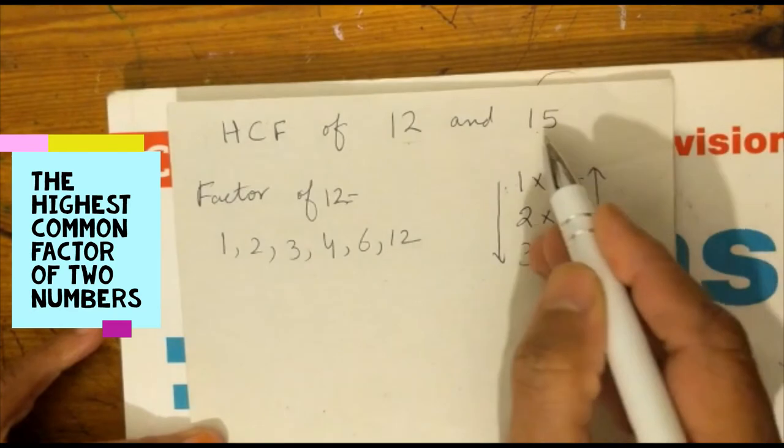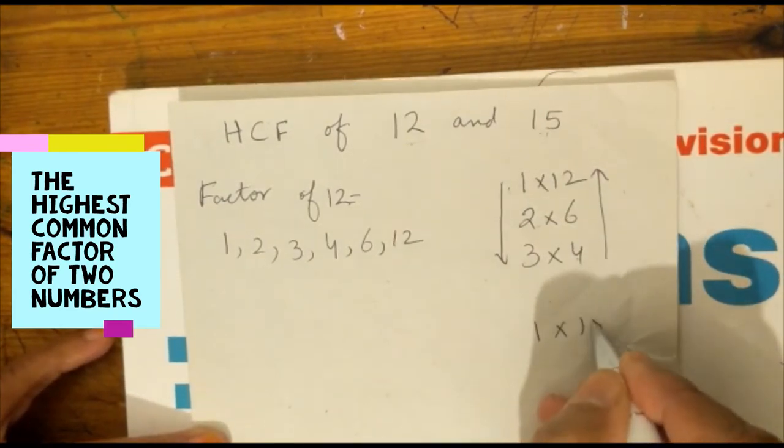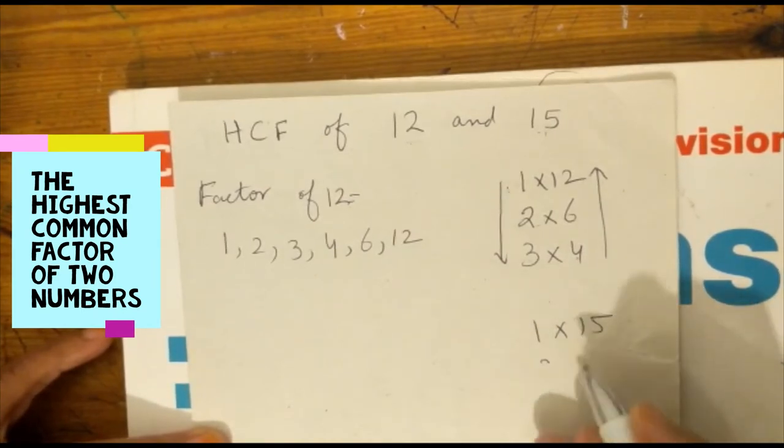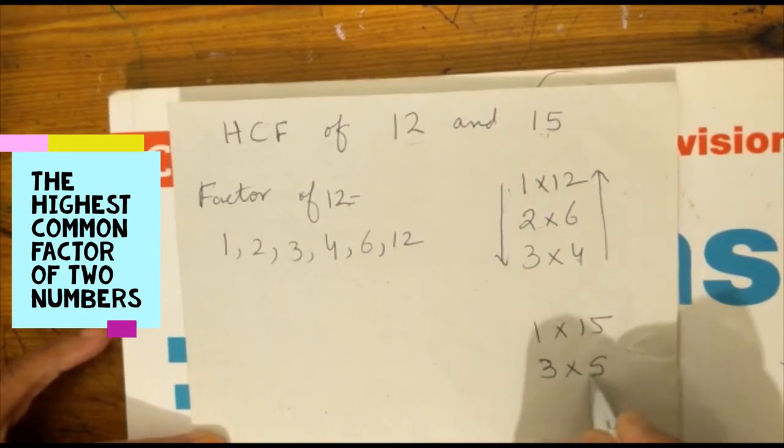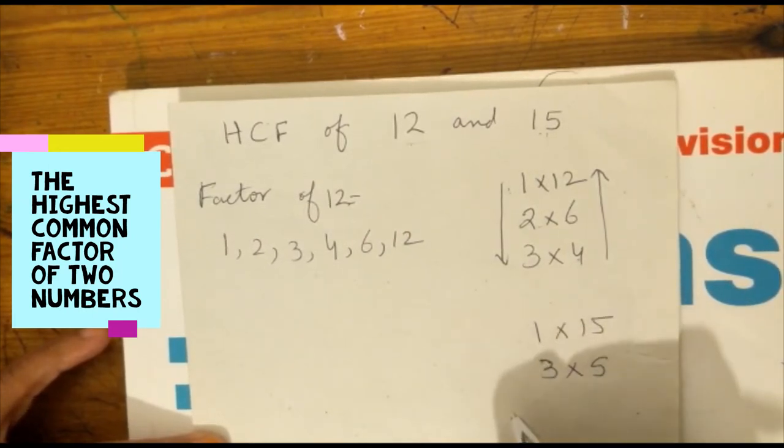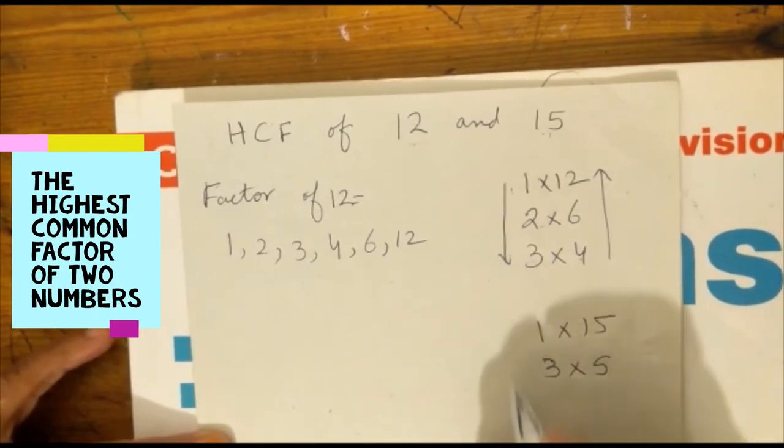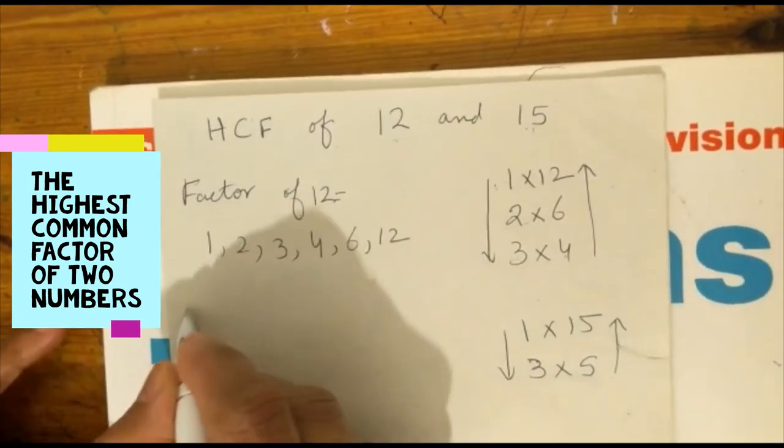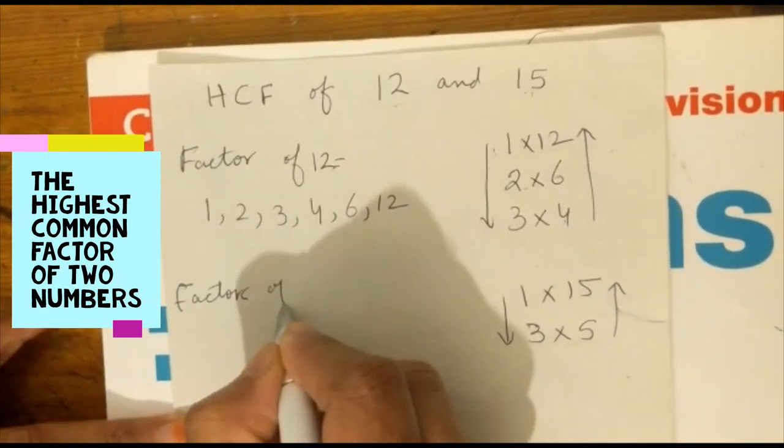Now factors of 15. We will write 1 times 15 equals 15. Then 2 doesn't work. We will check 3 times 5 equals 15, then 4 doesn't work. The factors of 15 are 1, 3, 5, and 15.